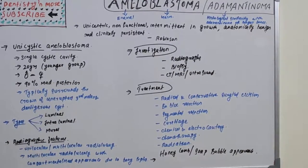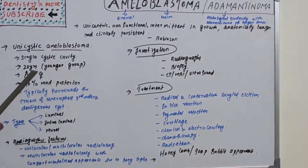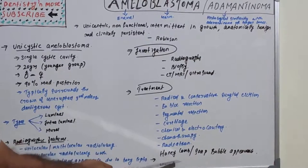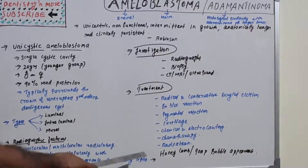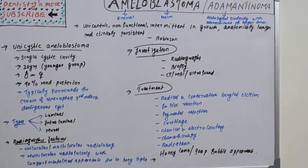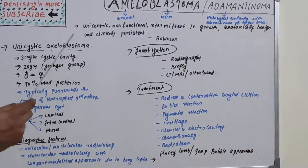Regarding radiographic features, unilocular or multilocular radiolucency can be seen. The striking radiographic appearance in ameloblastoma is honeycomb or soap bubble appearance — like compartments, resembling a bunch of soap bubbles. This multilocular radiolucency with compartmentalized appearance is due to bone septa in between, giving a honeycomb or soap bubble appearance, which is a characteristic radiographic feature.